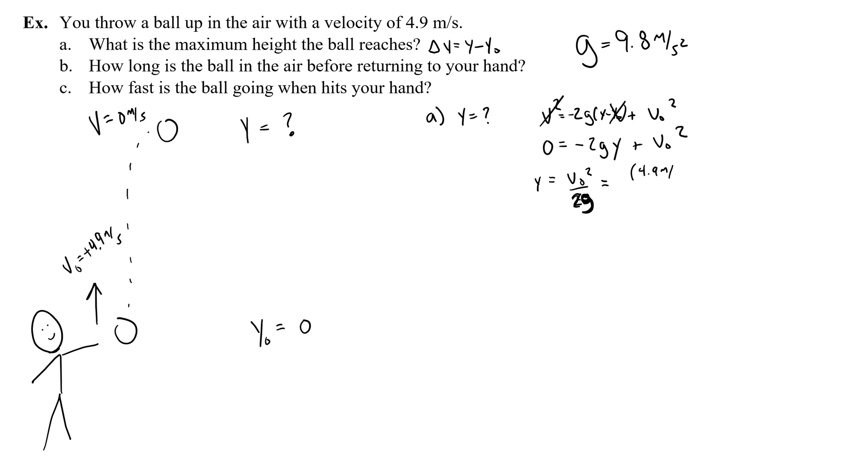So 4.9 meters per second, the whole thing squared, over 2 times 9.8 meters per second squared. So that's going to give me 24.01, we'll say 24, I'll just say 24 meters per second squared, meters squared per second squared, over 19.6 meters per second squared. The second squared is canceled, this meter cancels the meter squared. And that's going to give me 1.225 meters. So 1.225 meters is the maximum height that the ball reaches.